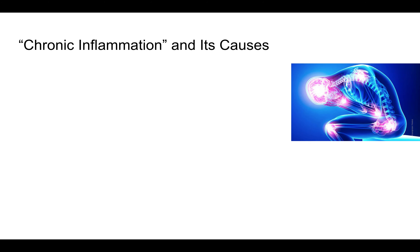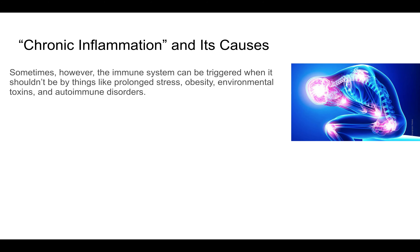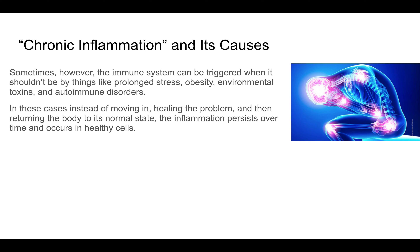And then there's chronic inflammation. Sometimes the immune system can be triggered when it shouldn't be, by things like prolonged stress, obesity, environmental toxins, and autoimmune disorders — or the immune system attacking your own body. In these cases, instead of moving in, healing the problem, and then returning the body to its normal state, the inflammation persists over time and occurs in healthy cells.